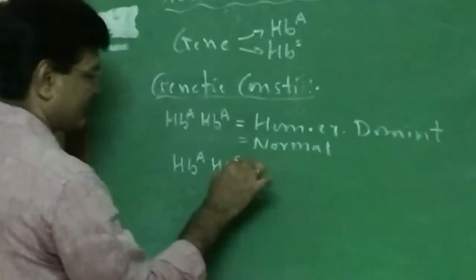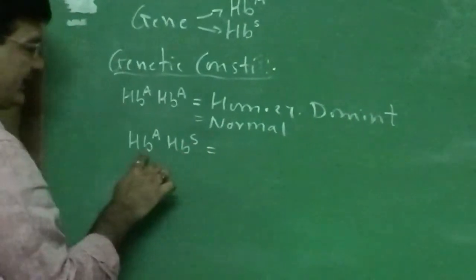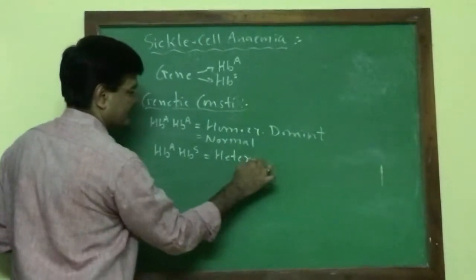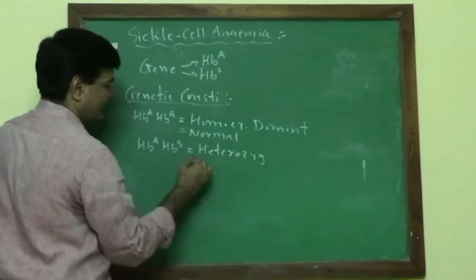If the gene is HBA and HBS, it means one is dominant and another is recessive - the condition is heterozygous, and in the heterozygous condition the individual is a carrier of this disease.